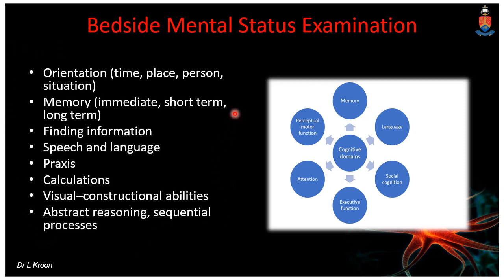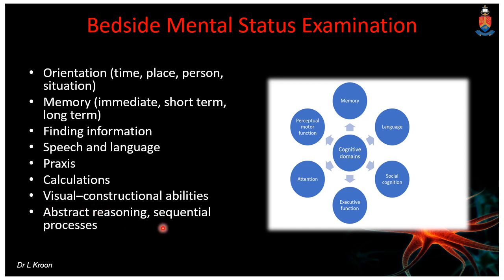The bedside mental status examination is a quick screen of the specific lobes in the brain. We do orientation to time, place, person, and situation — more of a frontal lobe function. Then memory: immediate memory is frontal lobe, while short-term and long-term memory are temporal lobe. Finding information is frontal lobe. Speech and language are parietal lobe, as well as praxis. Calculations are predominantly frontal but also involve the parietal lobe, as in Gerstmann syndrome. Visual constructional abilities are non-dominant parietal, and abstract reasoning or executive functioning is predominantly frontal.